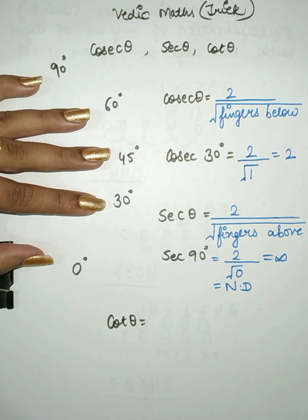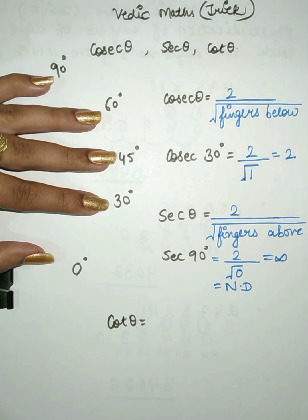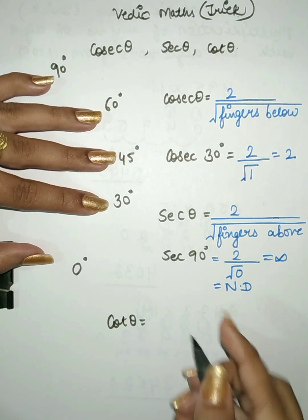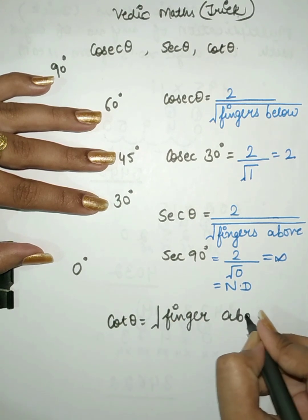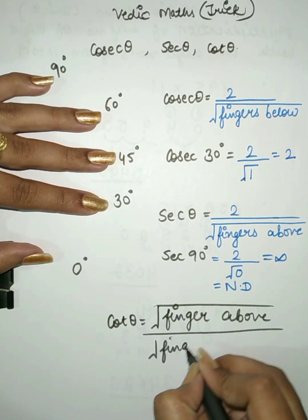Now for finding the value of cot theta, we know that cot theta is the reciprocal of tan theta. And tan theta has the formula root of fingers below divided by root of fingers above. So for cot theta, we do the reciprocal, and after reciprocal we get the formula: cot theta equals root of fingers above divided by root of fingers below.